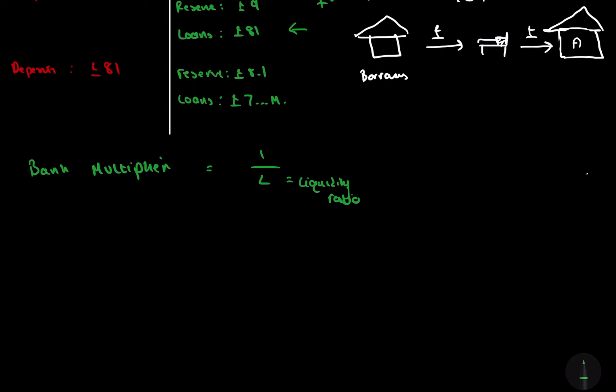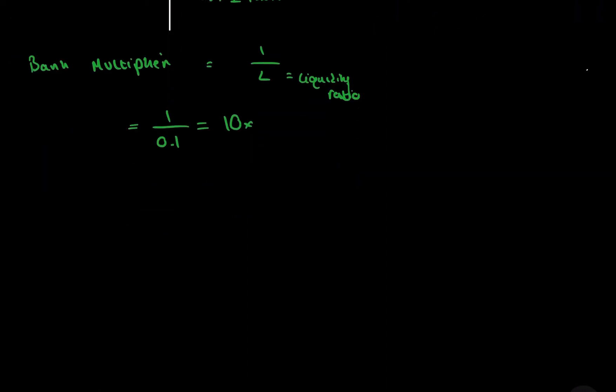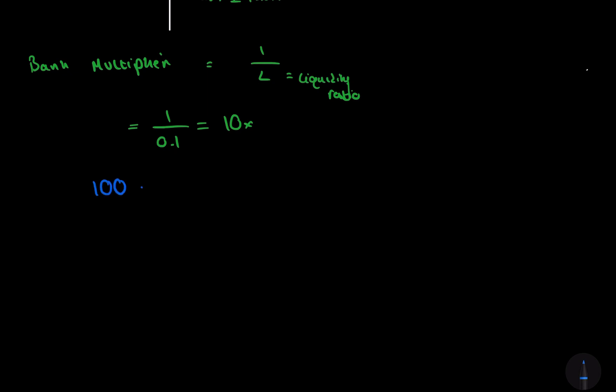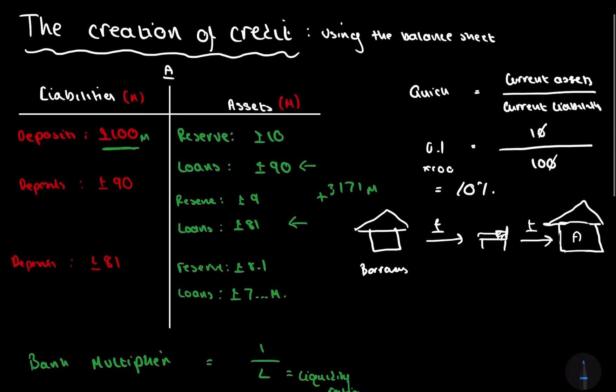And so, an initial injection, we can do the maths. That's 1 over 0.1, which is going to be an injection of 10. We're going to have a 10 times bank multiplier. This 10 times bank multiplier will mean our initial 100 million times 10, which will leave us with 1000 million total, or 900 million in additional credit created.